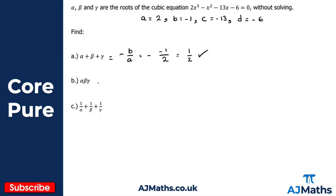For part b, we're looking at the product of the roots. That's going to be minus d over a, which is minus minus six over two, giving us minus six over two times minus one, and we get positive three.